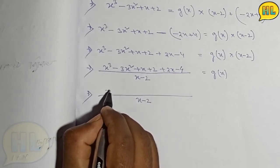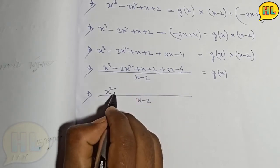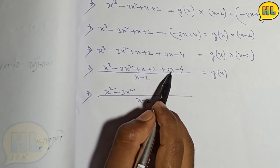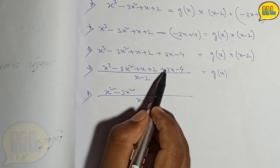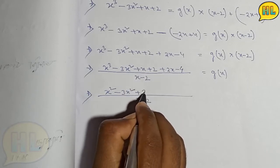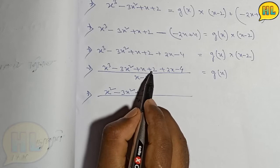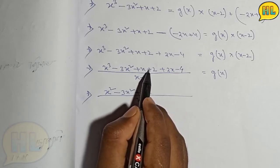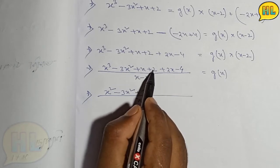Let me factor out x minus 2. X cube, x cube is here, minus 3x square is here, plus x here, plus 2x here, minus 4 here.